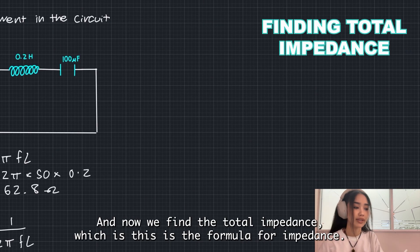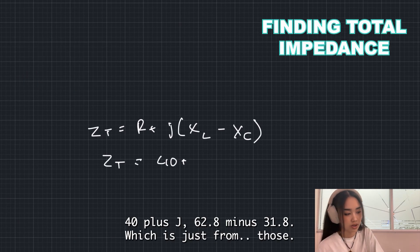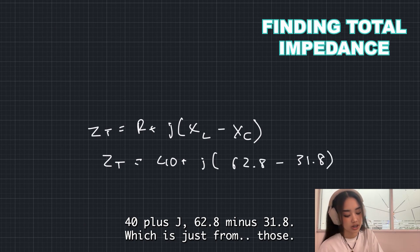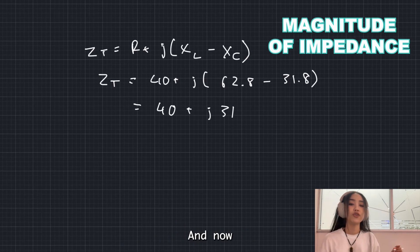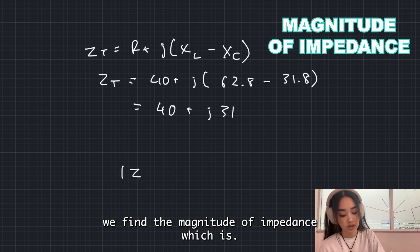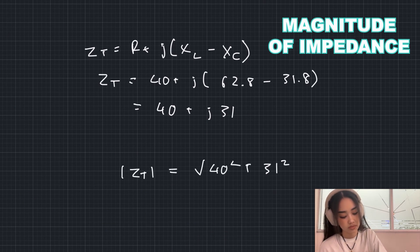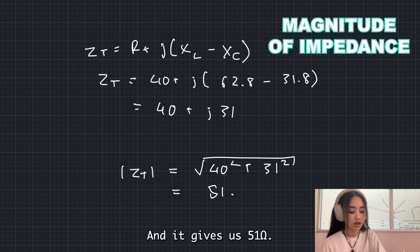Now, we find the total impedance, which is this form. Total impedance: 40 plus J, 62.8 minus 31.8, which is just from those, that becomes that. And now we find the magnitude of impedance, which is that. And it gives us 51 ohms.